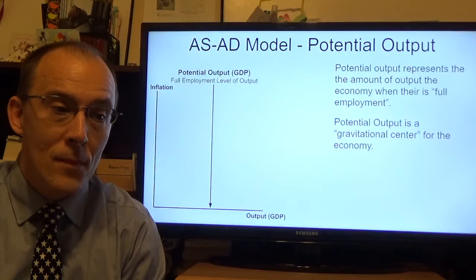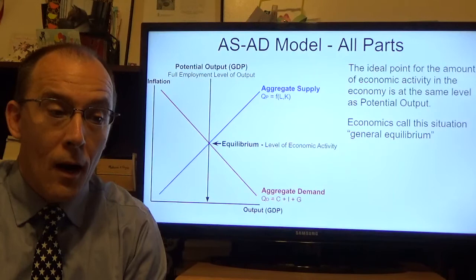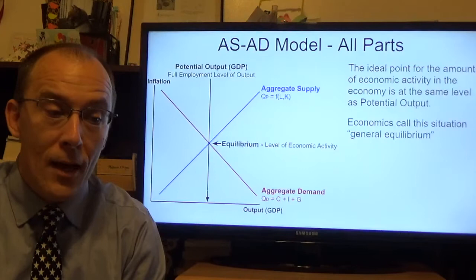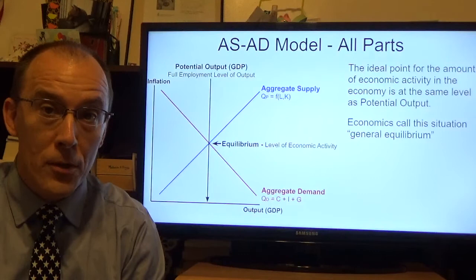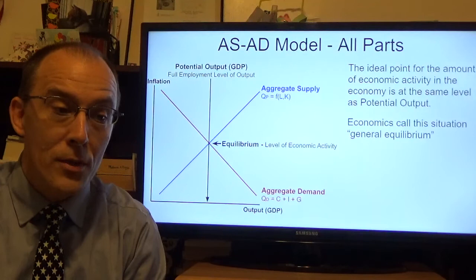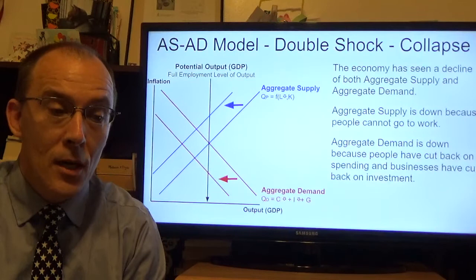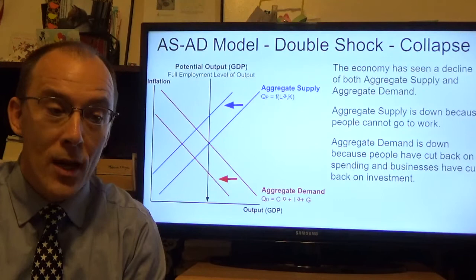Our whole model put together consists of three pieces: the potential level of output represented in green, the aggregate supply curve in blue, and the aggregate demand curve. When potential output, aggregate supply, and aggregate demand all intersect in the same place, that's considered general equilibrium — the ideal resting place, the full employment level for the economy. The United States was pretty much at general equilibrium before the coronavirus hit. When the coronavirus hit, it was a double shock, causing both sides of the aggregate supply aggregate demand model to contract.